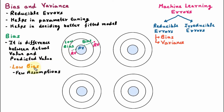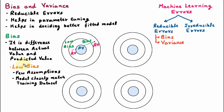In low bias, the machine learning model closely matches the training dataset. As the difference between actual and predicted values is low, the model is almost matching the training dataset. The second type of bias is high bias — when the actual value is far from the predicted value, meaning the difference between actual and predicted value is very high. This is called high bias.